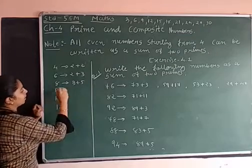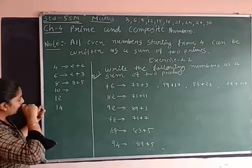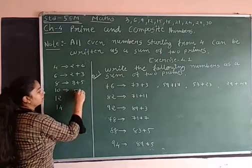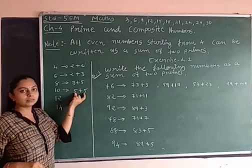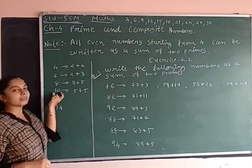Go for 10. How can we do this? 5 plus 5. Right? Both are prime numbers. But when you will add, you will get a composite number.